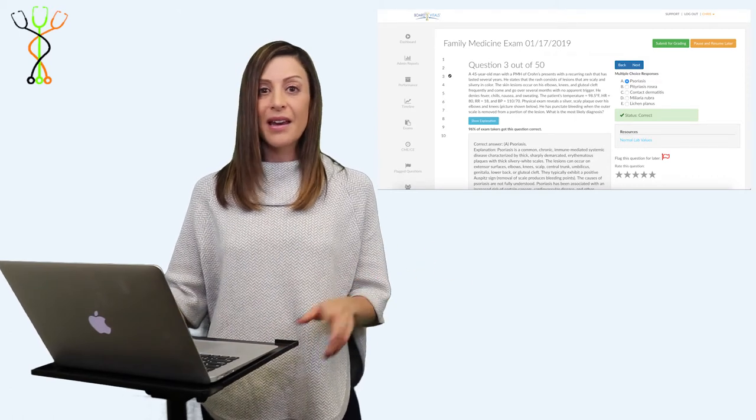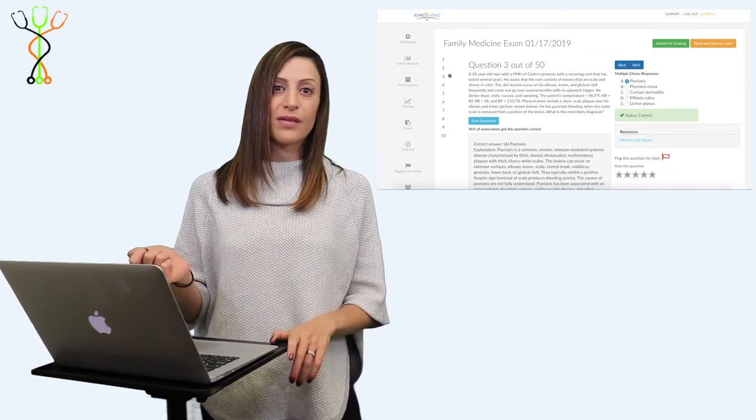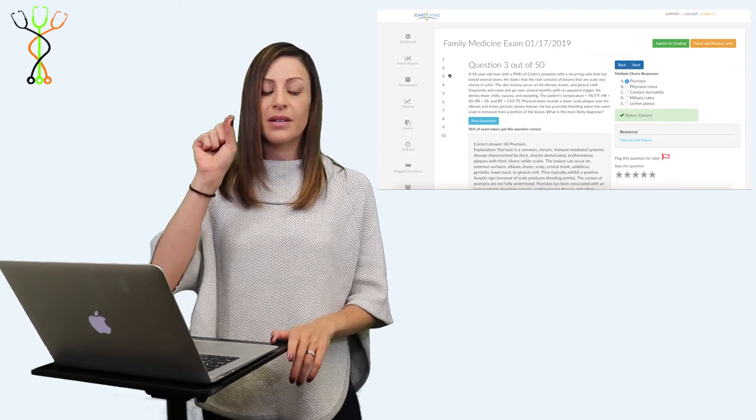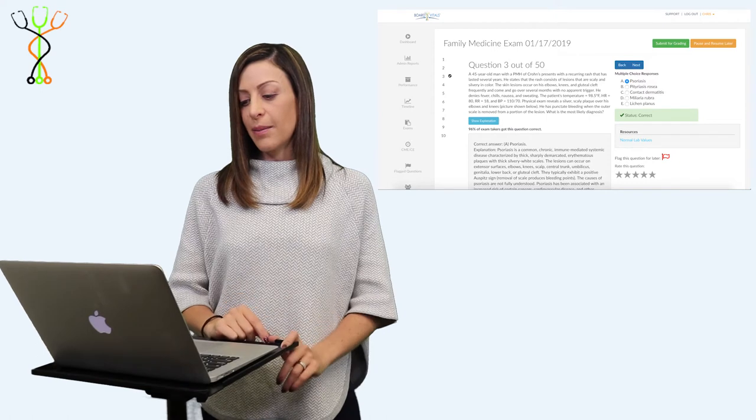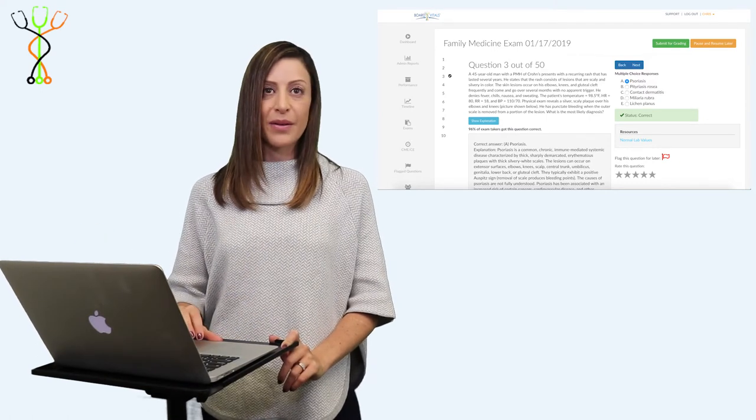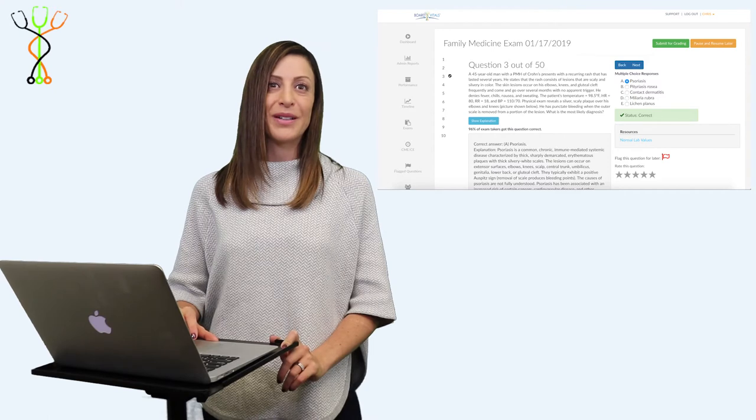So the classic thing, which is called Auspitz sign, is that when you peel away one of these silvery plaques, you'll have punctate, little tiny dots of bleeding, like little pinpoints. That's a really classic clinical finding, so that should help you find the answer in this question too.